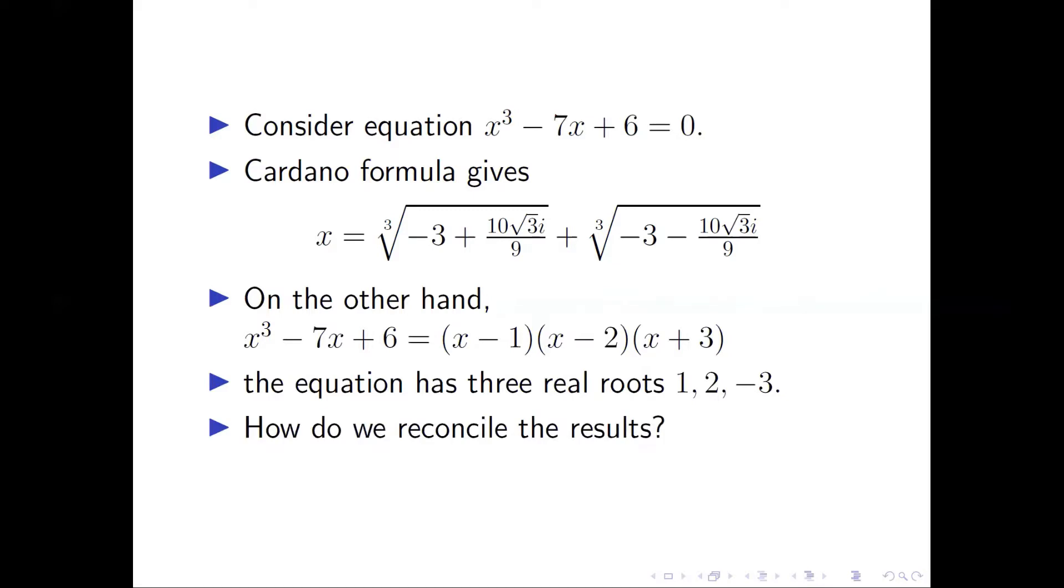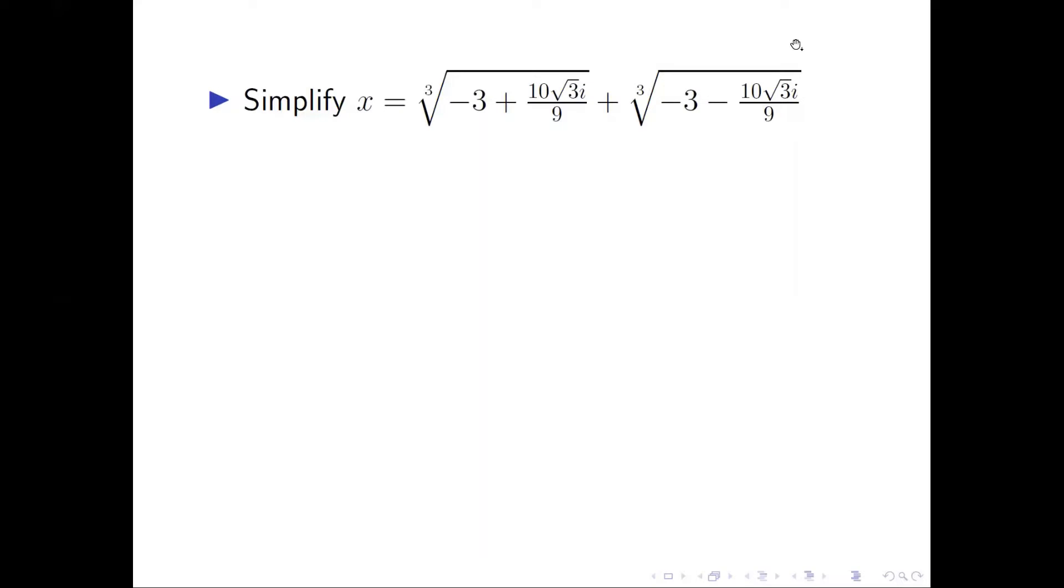How do we reconcile the result? We need to simplify the expression. The first cubic root has three values, all complex numbers, with real parts 1 half, 1, and negative 3 half.